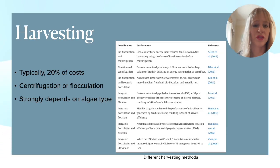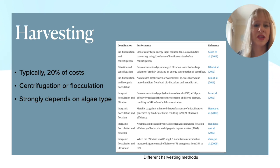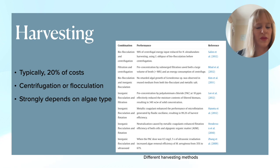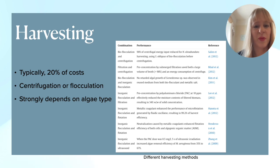Harvesting and extraction constitute a large amount of the costs — harvesting is around 20% of the costs. Typically this is done with centrifugation or flocculation. Flocculation is a process by which you add a chemical coagulant to the water to facilitate bonding between the particles, forming larger aggregates which are much easier to separate and filter out. One of the complications is that all of this very strongly depends on the algae type, so there's not one specific downstream process. There's a real demand for techniques which are agnostic towards the type of algae that you use.